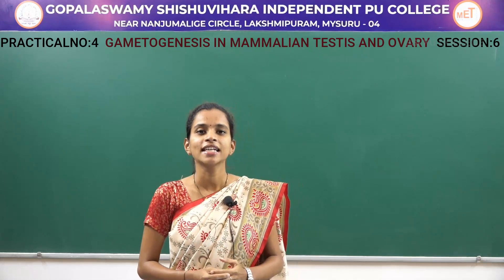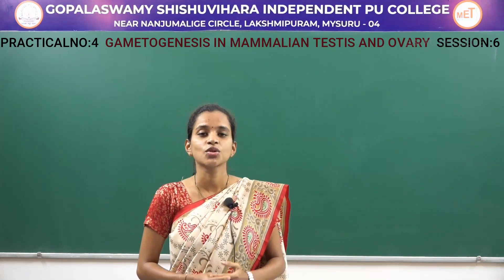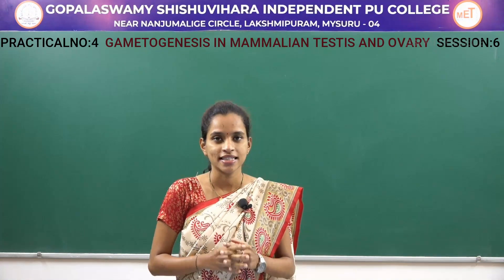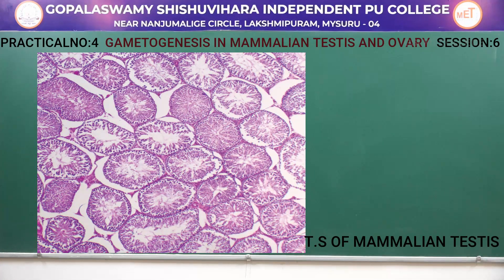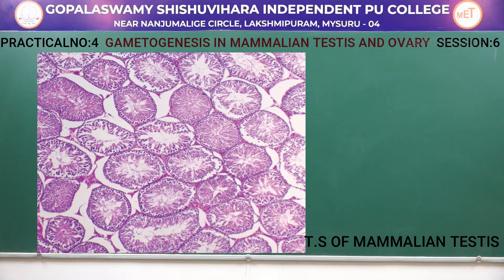We will be studying the transverse section of mammalian testes. On the screen you can see the TS of mammalian testes. There are a pair of testes with testicular lobules containing seminiferous tubules lined with germinal epithelium. The germinal epithelium consists of spermatogonia and Sertoli cells.